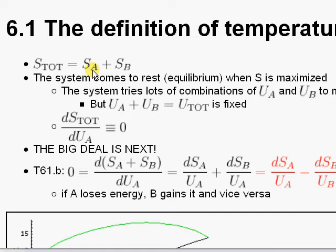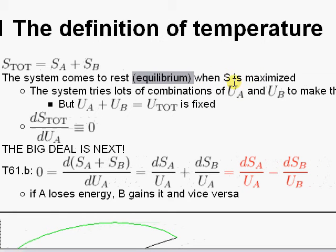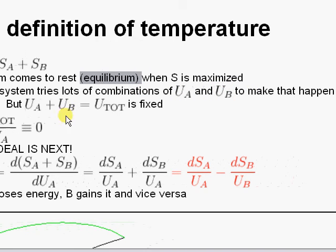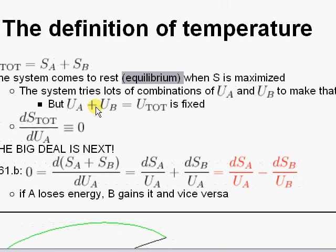If you don't do the natural log, you're doing microstates and you get a product, but we're really going to make use of the fact that it's the sum here. So it's just add up the entropy of one system and the entropy of the other system. Now the system comes to rest, reaches some sort of equilibrium when S is maximized. That's the whole point of the previous chapter. What happens is the system tries lots of combinations of U_A and U_B to make that happen, but of course U_A and U_B are related—they have to add up to some total, so you can't just arbitrarily change both of them.